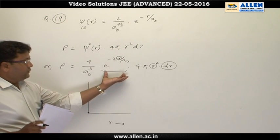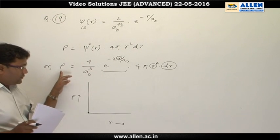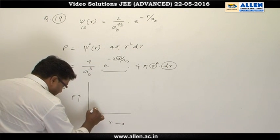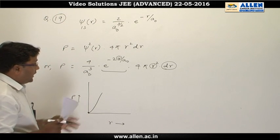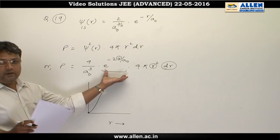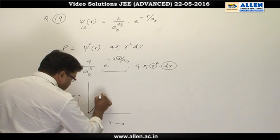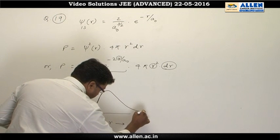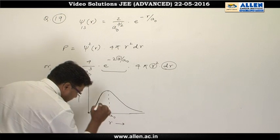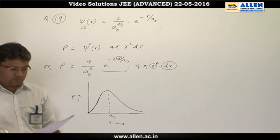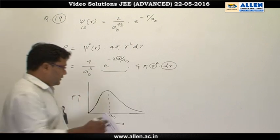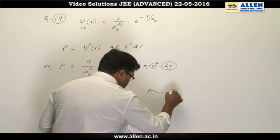Initially the r² term tends to dominate, so probability will parabolically increase with the increase in the value of r. But after a certain distance from the nucleus, the exponential term will start to dominate. After reaching a maxima, the curve will tend back toward zero. The maxima will be at a₀ for the 1s orbital. This is the solution of question number 19; the correct answer is B.